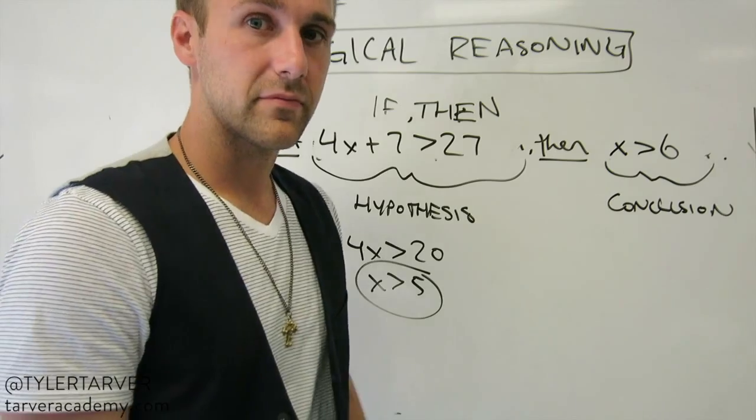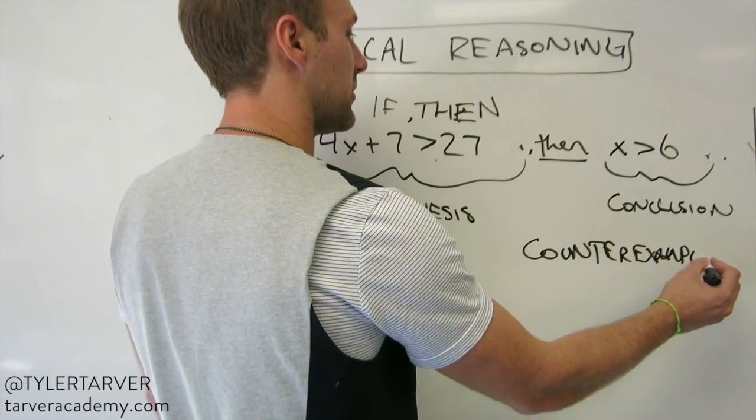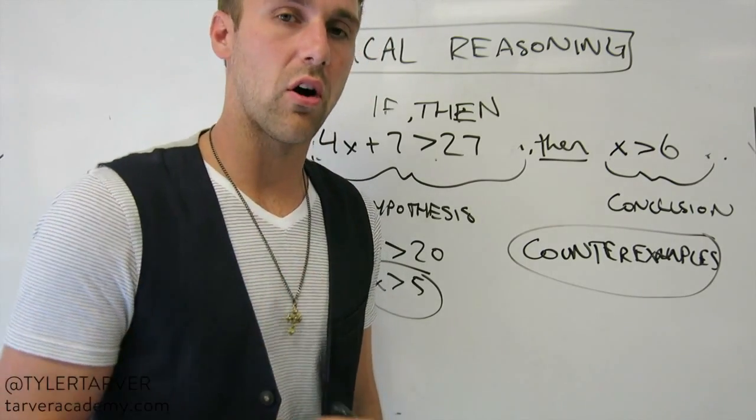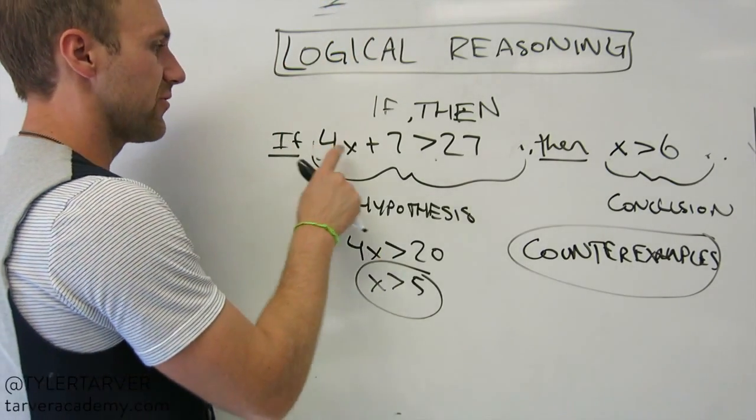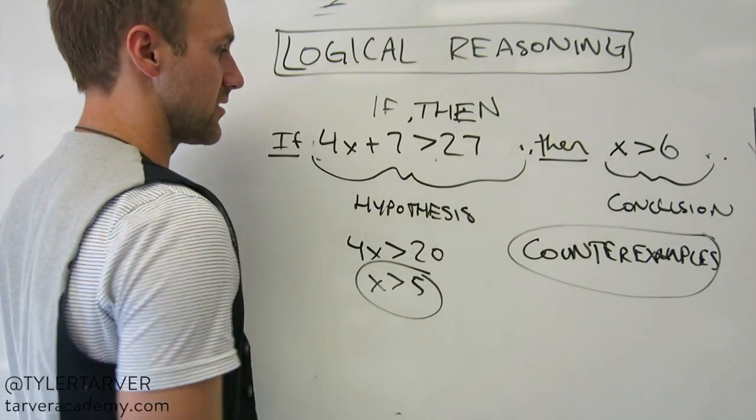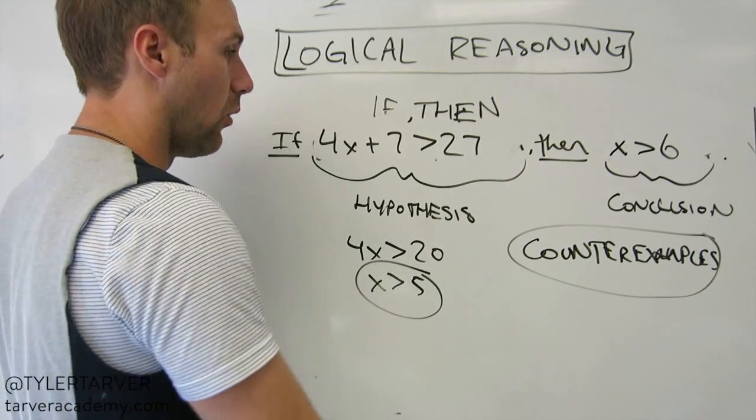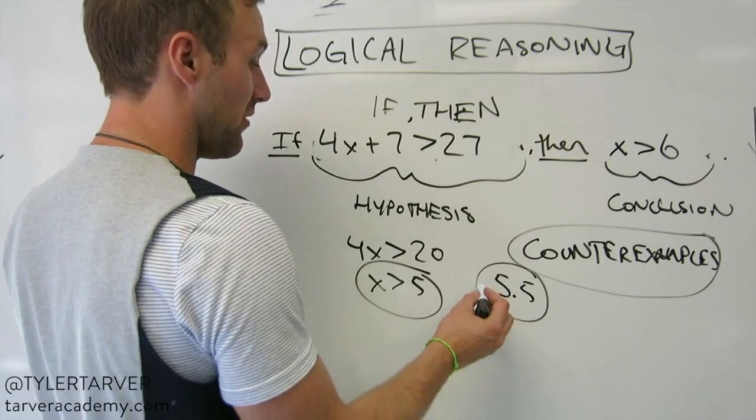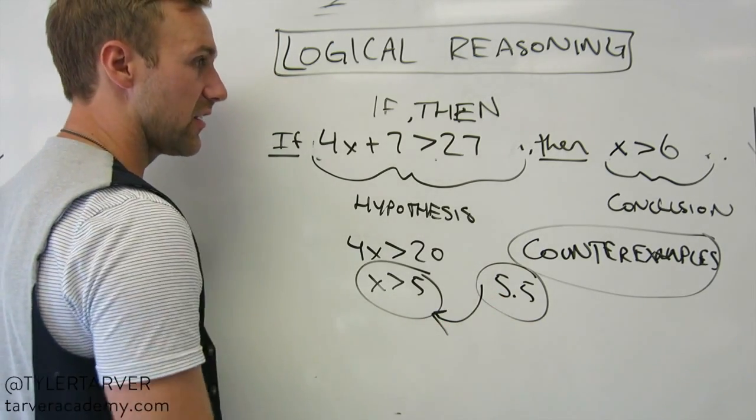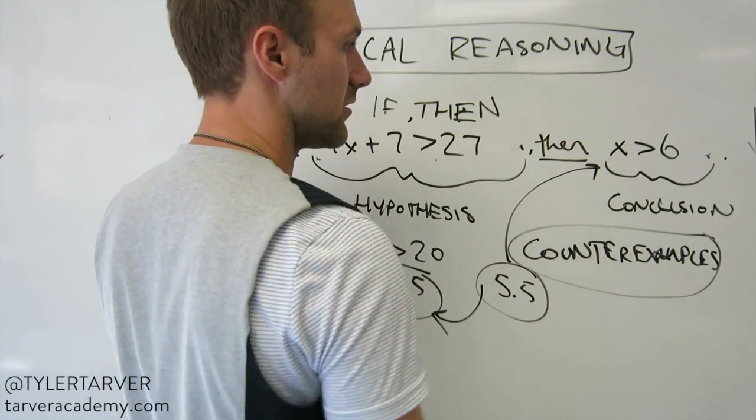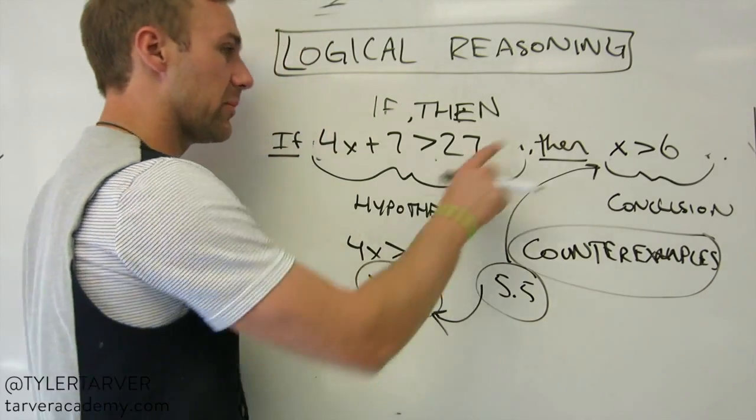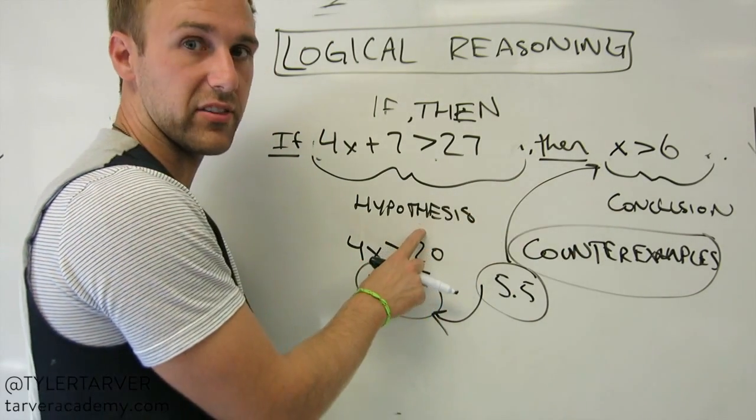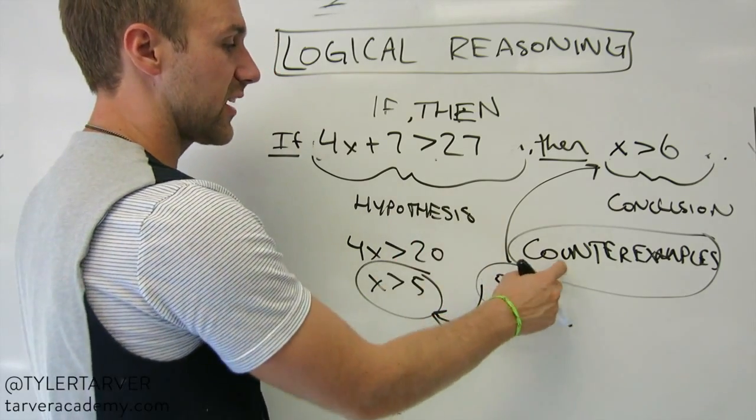So, that brings me to my next point. It's called a counterexample. This is one of my favorite terms because it's just so easy to explain. A counterexample is something that proves it wrong. If that is that, then that is that. Correct? Sure. Well, what about 5.5? 5.5 is greater than 5, but it's not greater than 6. It works here, but it doesn't work here. It proves our conclusion incorrect based on this hypothesis. Okay? That's a counterexample.